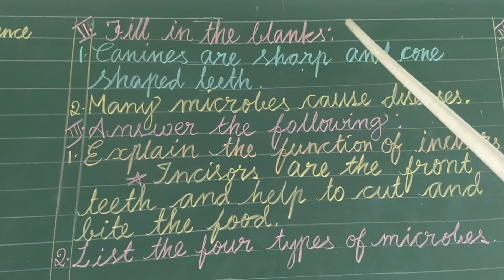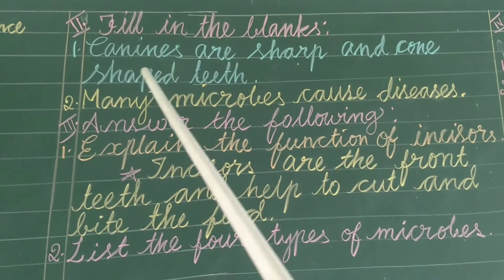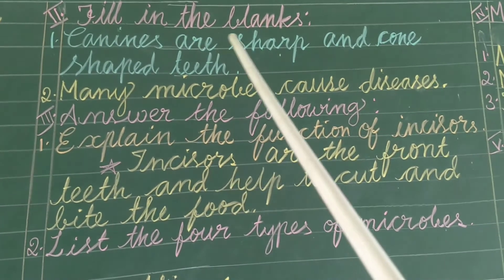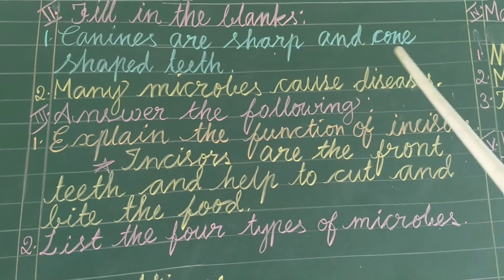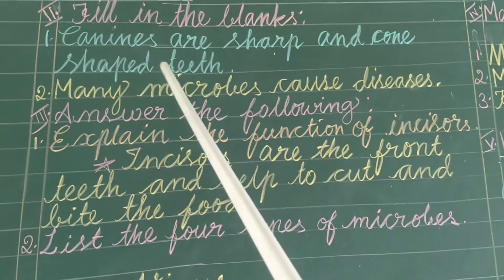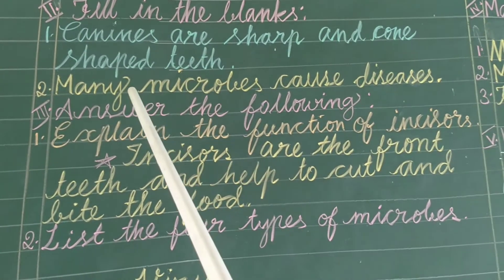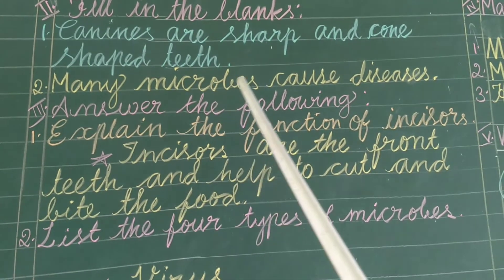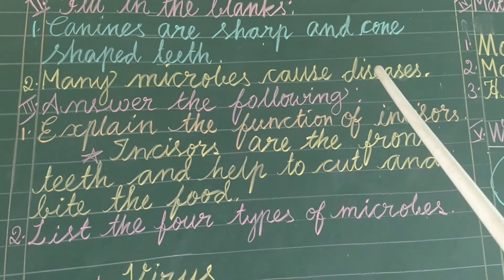And fill in the blanks. First one: canines cause soft and cone-safe teeth. Next: many microbes cause diseases.